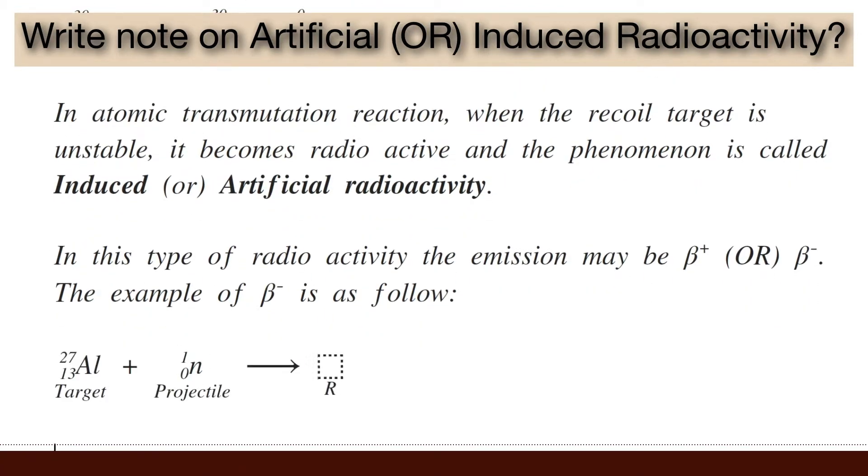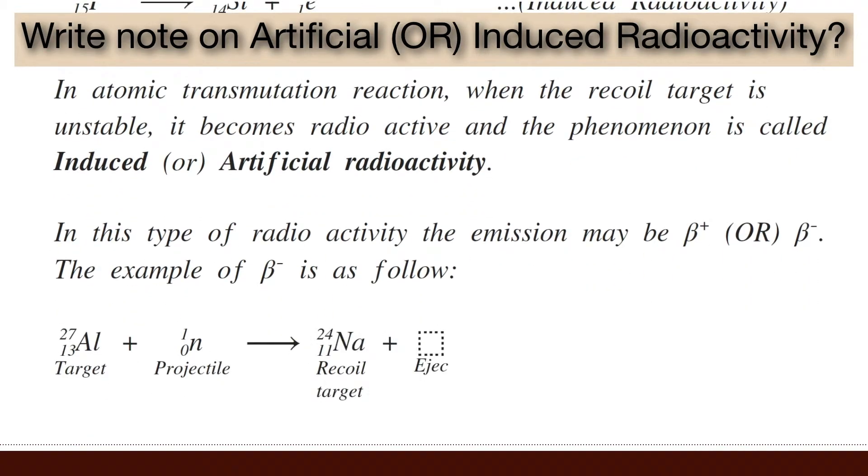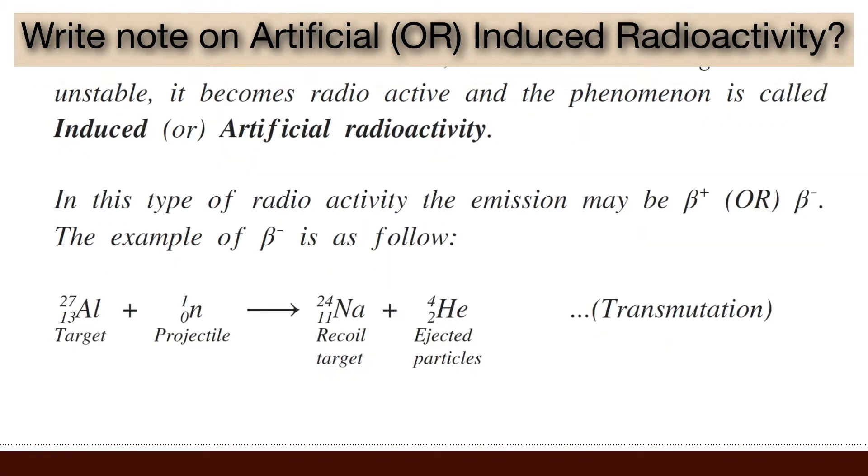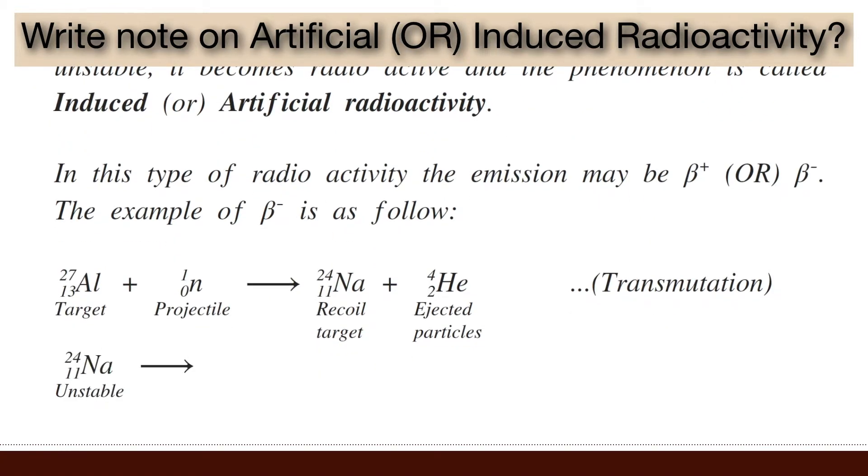when bombarded with projectile neutron, it produces sodium-24. This is transmutation reaction. And sodium-24 is unstable, which emits electron and produces magnesium-24. This is induced radioactivity.